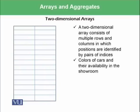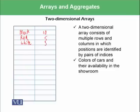Then there are two-dimensional arrays. A two-dimensional array consists of multiple rows and columns in which positions are identified by a pair of indices. We can conceptualize a real world example: suppose we want to store the colors of cars and their availability in a showroom. The showroom wants to store data like the car having black color is available in stock with a quantity of 10, red with 5, white with 8, and so on. This means one dimension of the array index tells you the colors, and the second dimension tells you the quantity available.